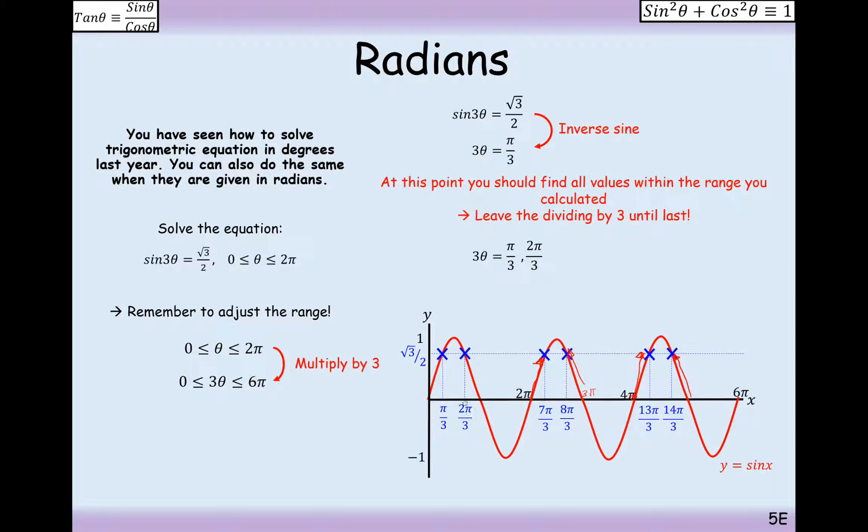Leave the dividing by 3 until last. So, your solutions here are 2π/3, 7π/3, 8π/3, 13π/3, and 14π/3. And now that we've found all of those 3θ solutions, we can now divide through everything by 3. So,